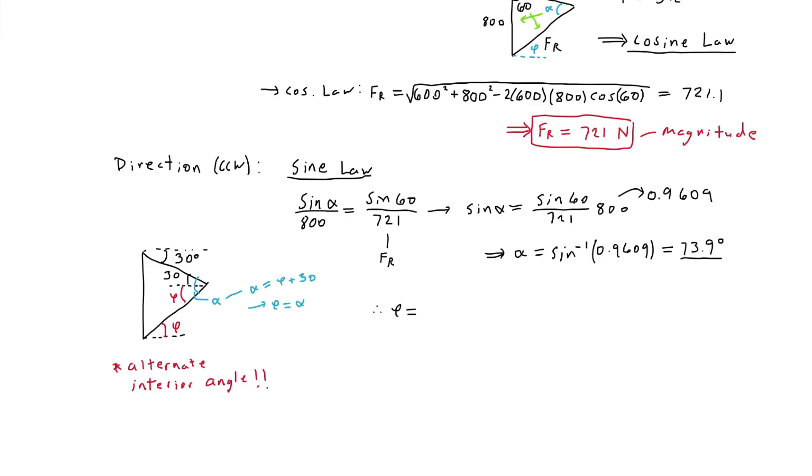Solving for phi, phi will be equal to alpha minus 30 degrees. Substituting the 73.9 degrees for alpha, we get 73.9 minus 30, which equals 43.9. Hence phi will be equal to 43.9 degrees, and that is the direction of FR measured counterclockwise from the positive x-axis.